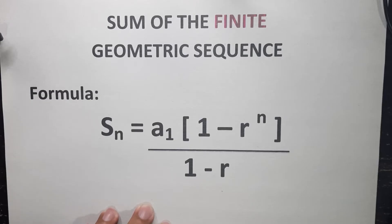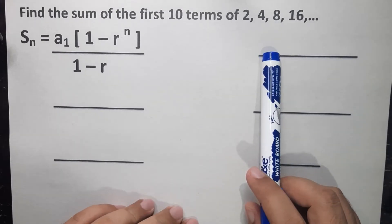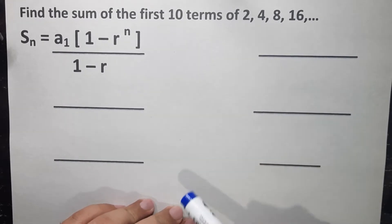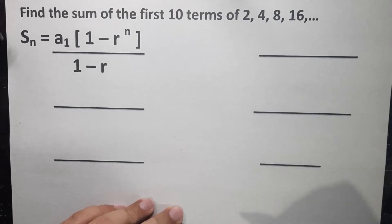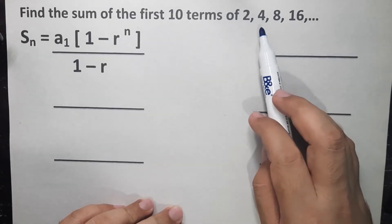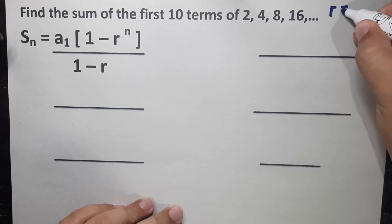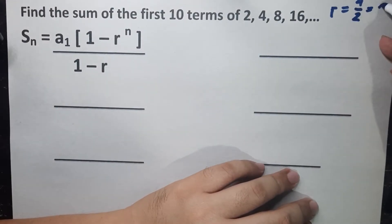Let's have our first example: find the sum of the first 10 terms of 2, 4, 8, 16. This is a geometric sequence. The first step is to find the common ratio — that is the current term divided by the previous term. Using 4 as the current term divided by the previous term 2, so 4 divided by 2 gives us a common ratio of 2.